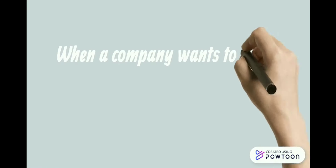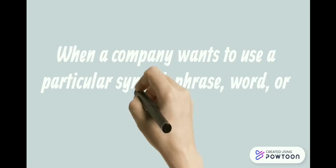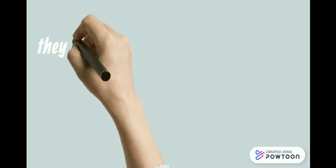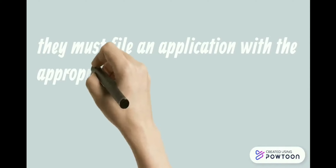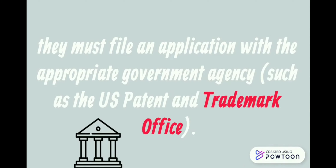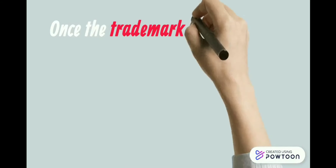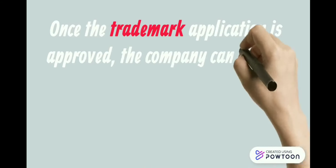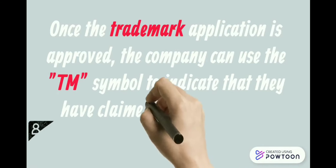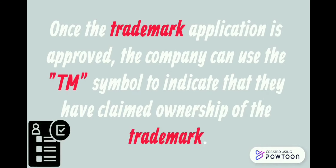When a company wants to use a particular symbol, phrase, word, or design as their trademark, they must file an application with the appropriate government agency, such as the U.S. Patent and Trademark Office. Once the trademark application is approved, the company can use the TM symbol to indicate that they have claimed ownership of the trademark.